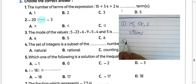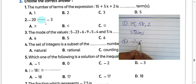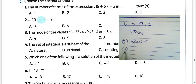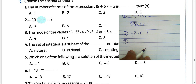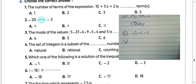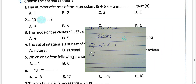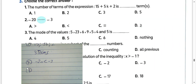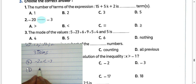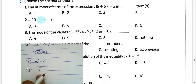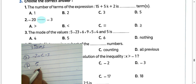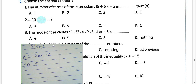Question number 2: negative 20 is less than negative 3. Question number 3: the mode — we must choose the number which is the most repeating. We have 5 repeating two or three times, so number 5 — we call it the mode. The mode is the number which is most repeated in the data. Choose 5.